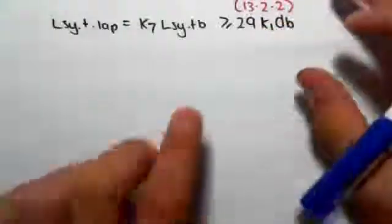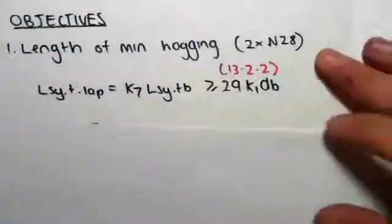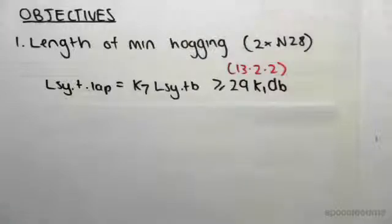We're looking at 13.2.2. If I get that section for you, section 13.2.2, we have lap splices for bars in tension. Here's the formula: lsy.t.lap is k7 times lsy.t, which is greater than 29 k1 db.